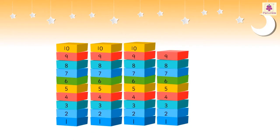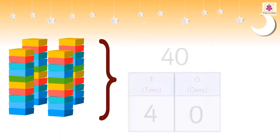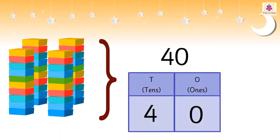39 and one more is 40. Four Tens together make 40. We call this as 40 Ones or 40 Units or 4 Tens and 0 Ones.